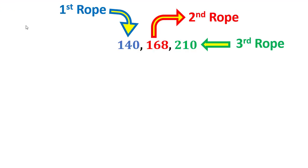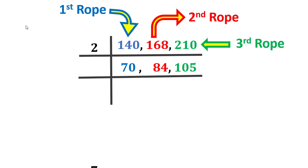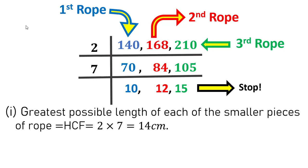We find the HCF of 140, 168 and 210. All three numbers are divisible by 2, so we get 70, 84 and 105, which are multiples of 7. Dividing by 7 gives 10, 12 and 15. They do not have any common prime factor, so we stop dividing here. The HCF gives us the greatest possible length of each piece of rope, which is 2 × 7 = 14 cm.